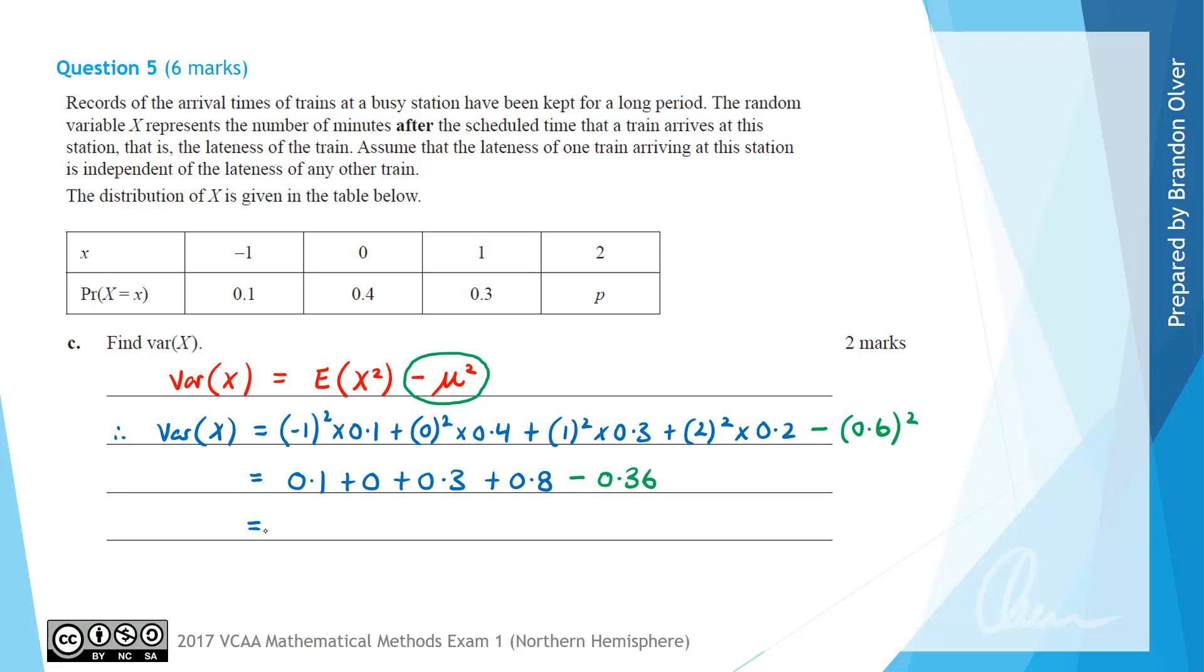So this can be calculated out now to be 0.1 plus 0.3 is 0.4 plus 0.8 is 1.2. And then we subtract away 0.36 giving 0.84 as our final answer. So that is the value of the variance of X, which is what was asked of us in part C of this question.